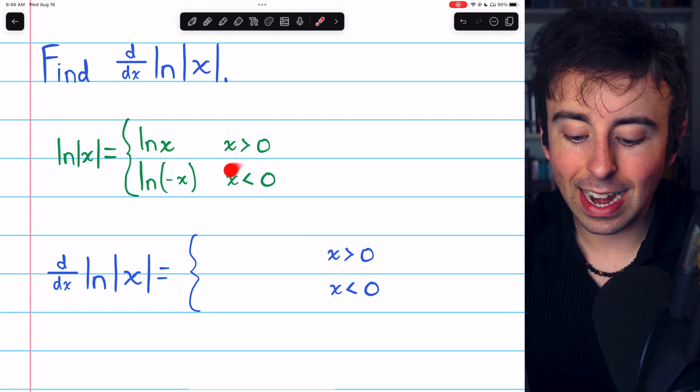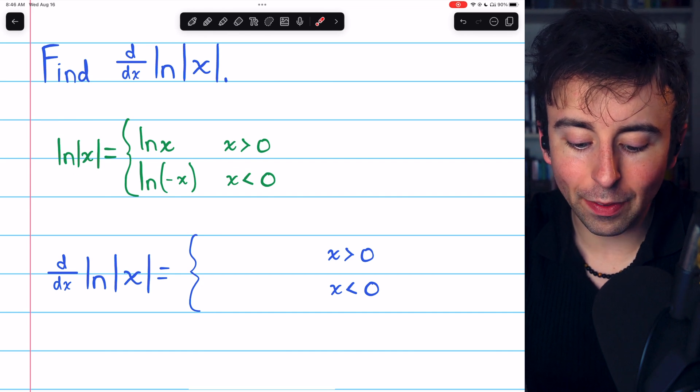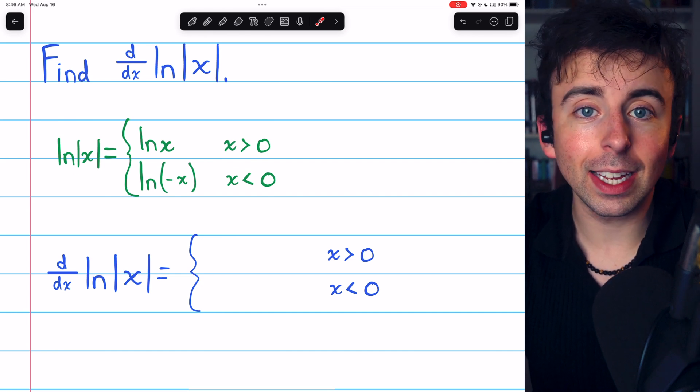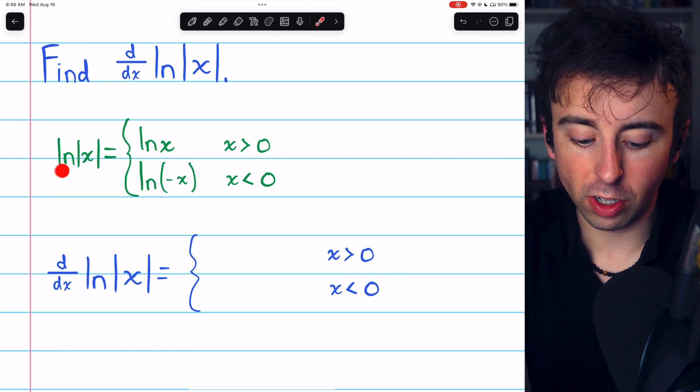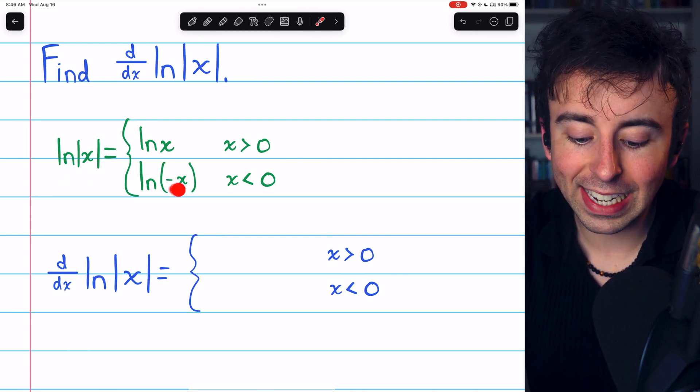On the other hand, if x is negative, the absolute value will give it another negative to flip it into a positive, and so the function will be the natural log of negative x.